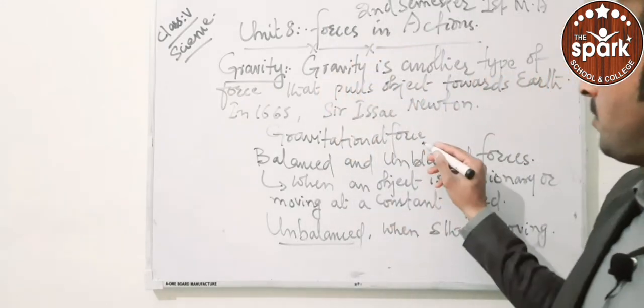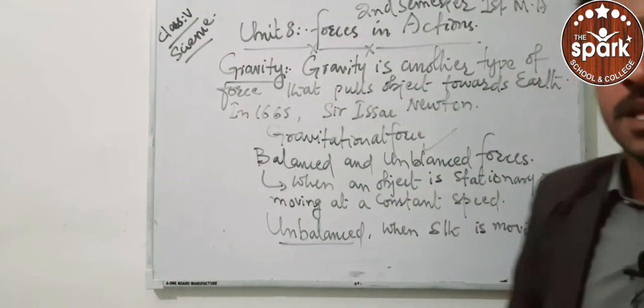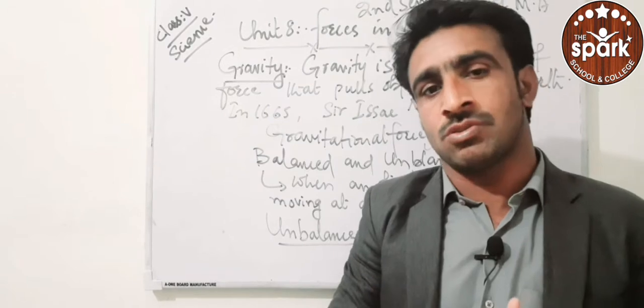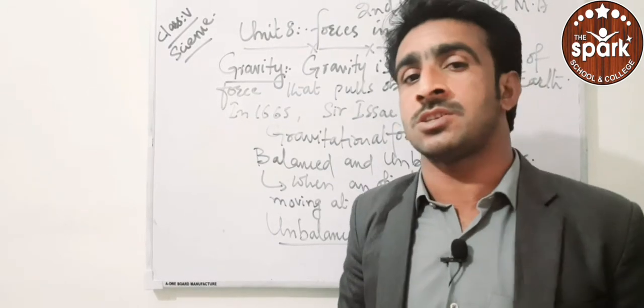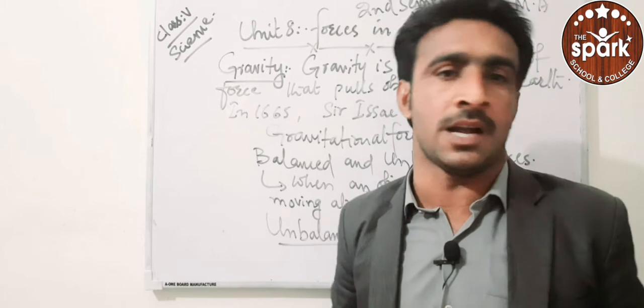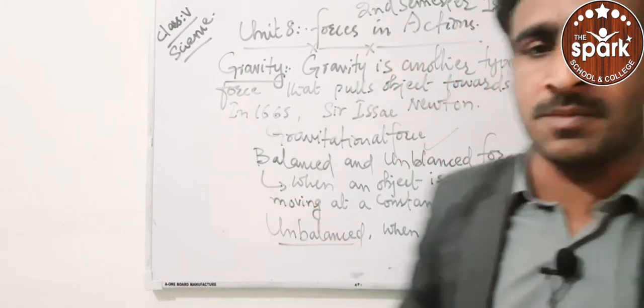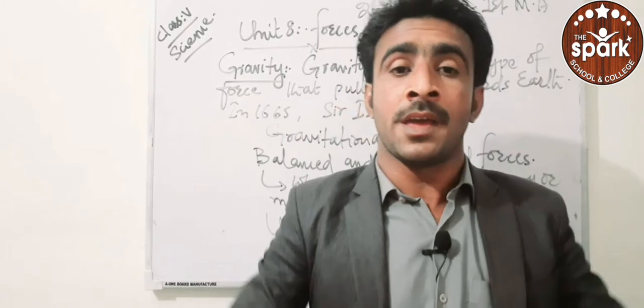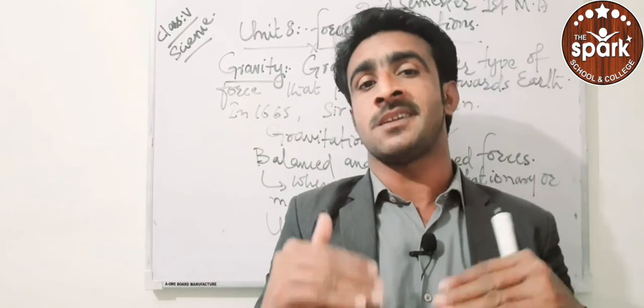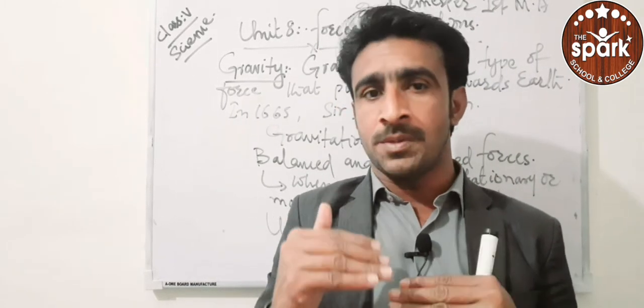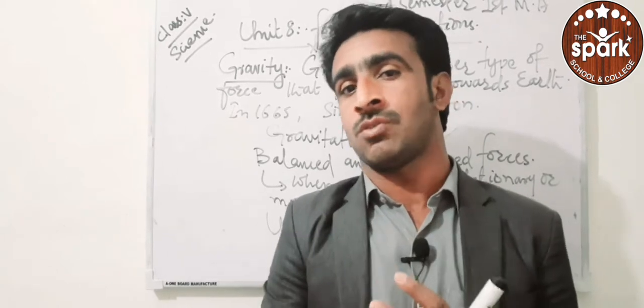The next step is balanced and unbalanced forces. When an object is stationary or moving at a constant speed, it is called a balanced force. For example, if I'm standing still or moving at a constant speed, that object has a balanced force.